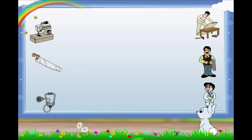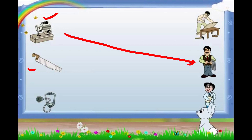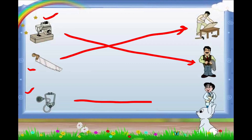Let us have a small exercise. Now you have to match the helper with its tools. The first one is a sewing machine — who uses it? A tailor. Now you can see one saw — who uses a saw? A carpenter uses a saw for making furniture. Here is a stethoscope — who uses a stethoscope? A doctor uses a stethoscope for hearing the heartbeat of the patient.